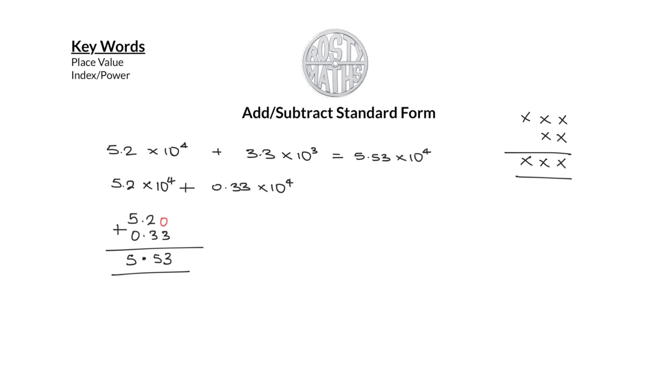So anyway, on this first number here I need to move four decimal places there. So that first number becomes 52,000. Always double check it. One, two, three, four. We're good. And then this second number here would be 3,300. So I'm adding 3,300 there. Always double check it. One, two, three. That's perfect. So I am now going to add these two numbers.